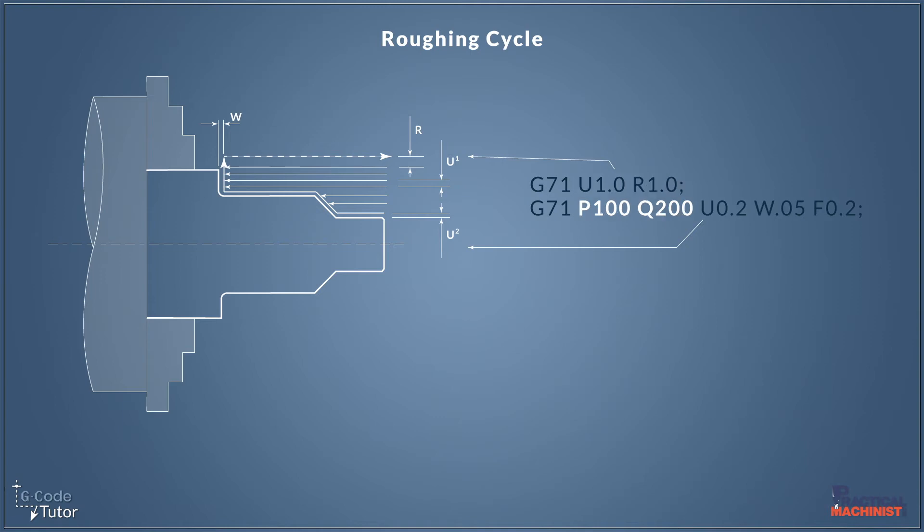Looking at this second line here, P100 Q200. This is the start and end point of our subroutine, and the subroutine is where we would program the profile of our part. These numbers do not have to be P100 Q200. It could be P anything you like and Q anything you like, as long as it ties in with the subroutine and matches the subroutine.